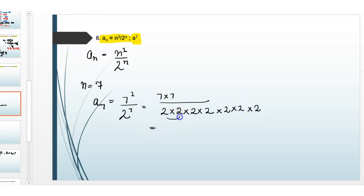Calculating 2 to the power 7: 2 times 2 is 4, times 2 is 8, times 2 is 16, continuing this gives us 128. So we have 49 divided by 128.